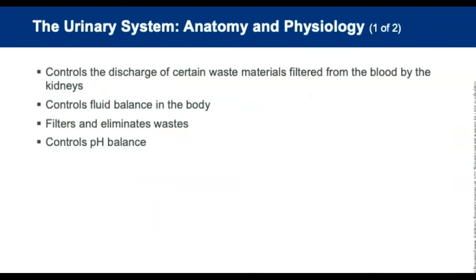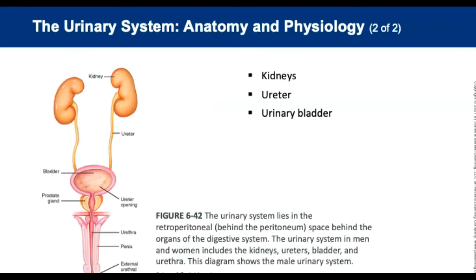The urinary system controls the discharge of waste materials filtered from the blood by the kidneys. Its main functions are to control fluid balance, filter and eliminate waste, and control pH. The kidneys are two solid organs in the retroperitoneal space that rid the blood of toxic waste and control the balance of water and salt. Ureters drain from each kidney into the urinary bladder, which is located immediately behind the pubic symphysis in the pelvic cavity.